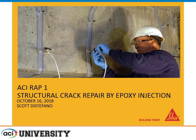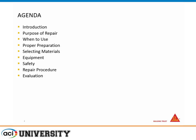RAP1 is obviously structural crack repair. These are the basics of the RAP document, going through the purposes, when to use it, why to use it. The most important one, I think, is proper preparation — we'll touch on that a little bit. Then materials, equipment, and then the actual basics of the repair.